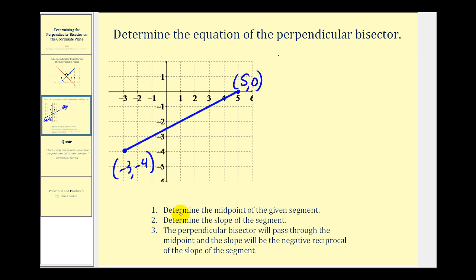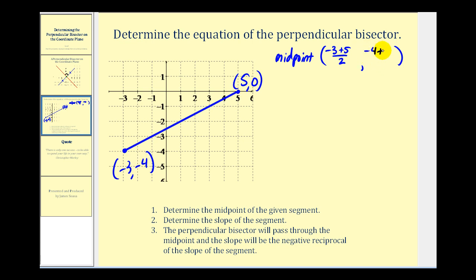The first step is to determine the midpoint of the given segment, which will give us one point on the perpendicular bisector. To find the x-coordinate, we sum the x-coordinates and divide by two: negative three plus five divided by two. For the y-coordinate, we add the y-coordinates and divide by two. So the x-coordinate is negative three plus five, that's two divided by two, which equals positive one. And the y-coordinate is negative four divided by two, which is negative two.